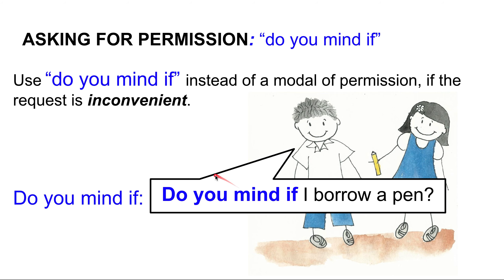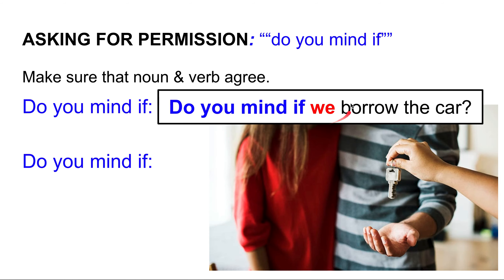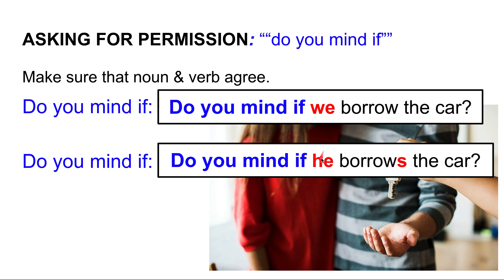Make sure the noun and verb agree with 'do you mind if.' For example: 'do you mind if we borrow the car?' — 'we' and 'borrow' agree. But if I change 'we' to 'he,' I must change 'borrow' to 'borrows,' because: he borrows, she borrows, it borrows, my friend borrows — but we, they, I, you borrow.